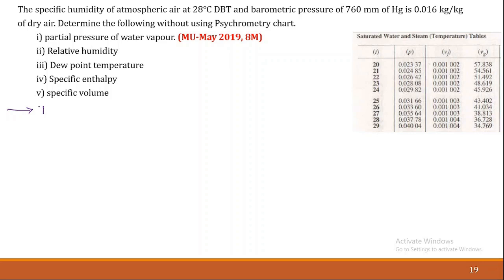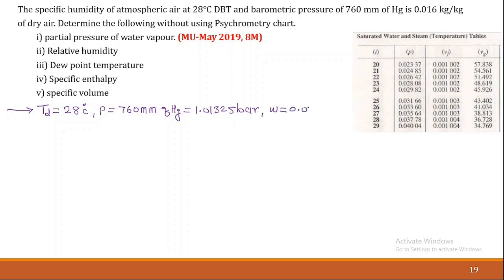We have to find out: partial pressure of water vapor, relative humidity, dew point temperature, specific enthalpy, and specific volume. Now let us start with what is given. Dry bulb temperature Td = 28°C. Barometric pressure P = 760 mm of Hg, which converts to 1.01325 bar. Specific humidity W = 0.016 kg per kg of dry air.